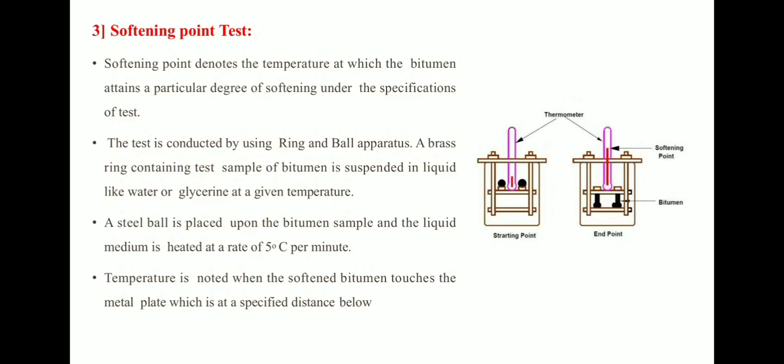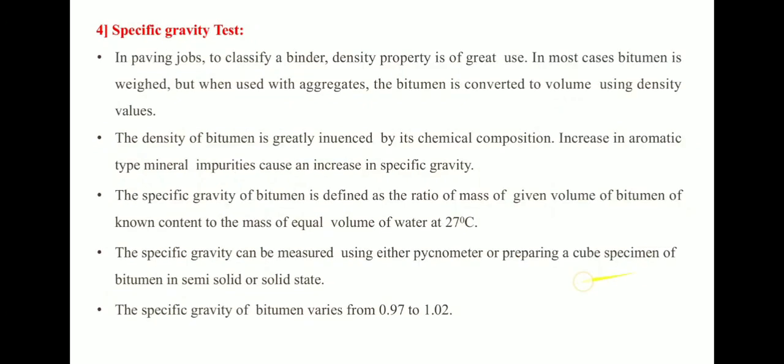There are two rings: one at the bottom and one at the top, with the bitumen sample on the upper ring and the ball on top. The liquid is heated at 5°C per minute. Once the bitumen starts melting, it flows down along with the ball, and when it reaches the bottom ring, the temperature is noted as the softening point.